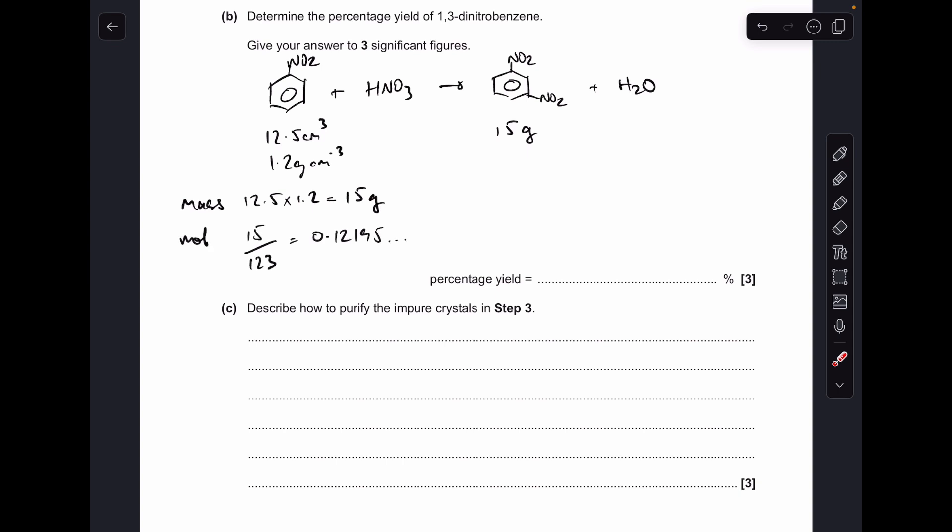Next thing we do is turn the mass into moles. So 15 over the MR of nitrobenzene which is 123. We get that many moles. The dot dot dot just means I've left the whole thing in the calculator. So because we've used that many moles of nitrobenzene, you can see the ratio is one to one. So you would expect to get the same number of moles of the product. Next thing I've done is worked out the moles of product that were actually made. So mass over its MR. So we've got that many moles of product made. So the percentage yield is the actual divided by the theoretical yield times 100. Which to three significant figures is coming out at 73.2%.